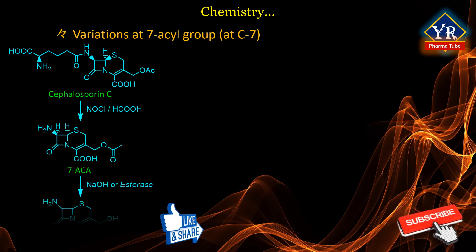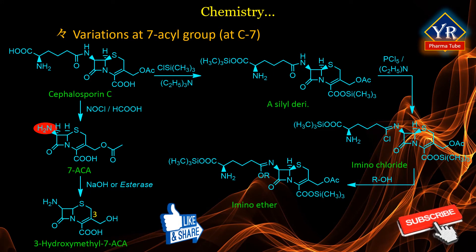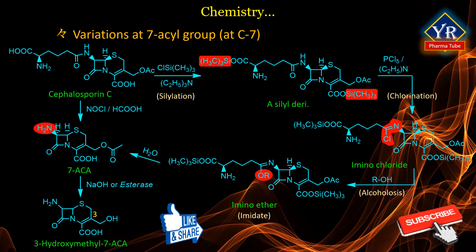The production of 7-ACA and related precursors from cephalosporin C is outlined here. Mild hydrolysis yielded only small quantities of the desired product, plus 3-hydroxymethyl-7-ACA and a lactone formed by the 4-carboxylic acid with the 3-hydroxy group. A more efficient synthesis requires protecting the 2-carboxyl groups by silylation, then chlorinating with phosphorus pentachloride, which activates the amide linkage into an amino chloride. Alcoholysis with anhydrous methanol or ethanol affords the imidate, which is readily hydrolyzed with water yielding the free amine and the 4-carboxyl group.